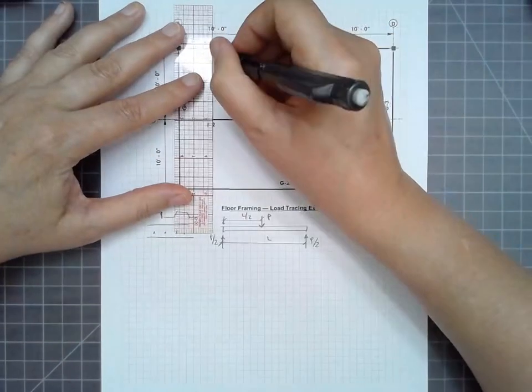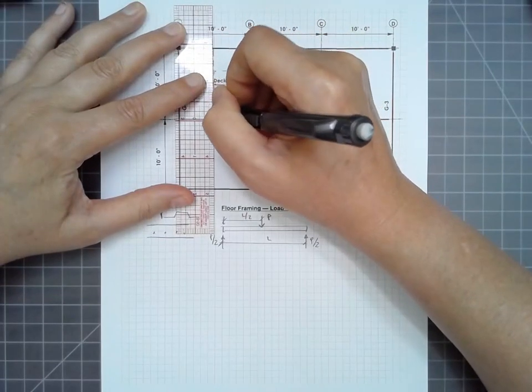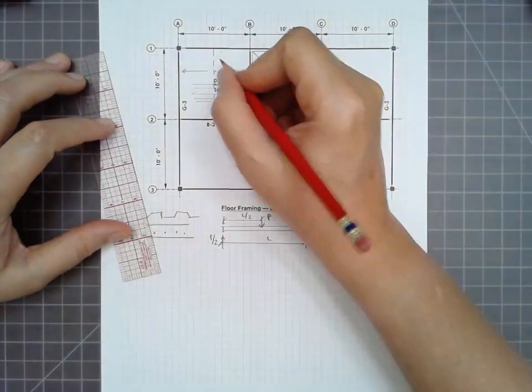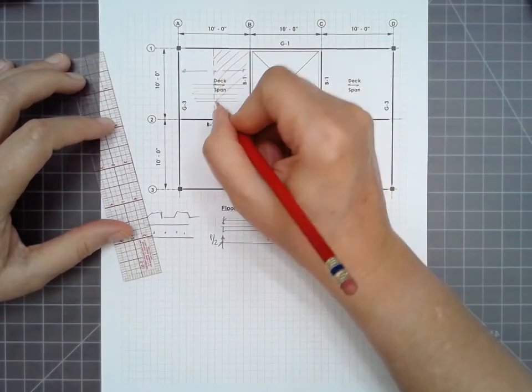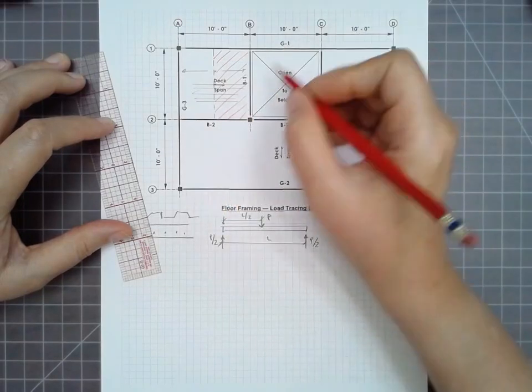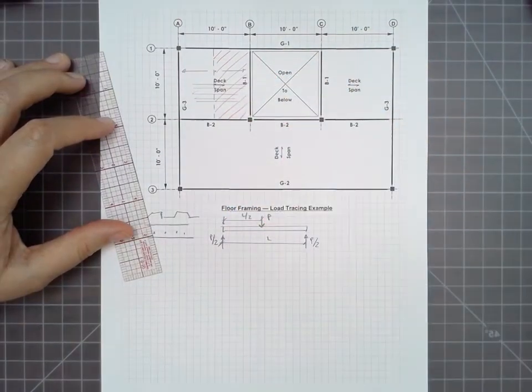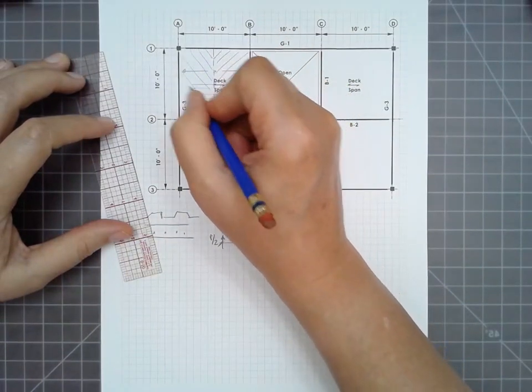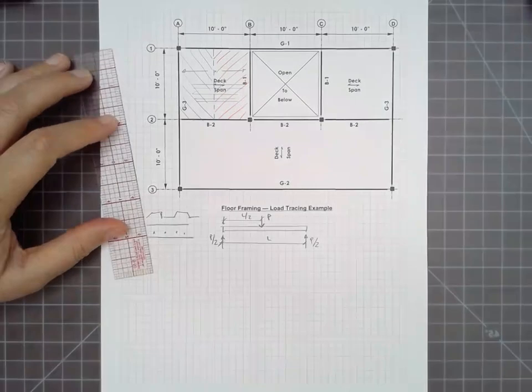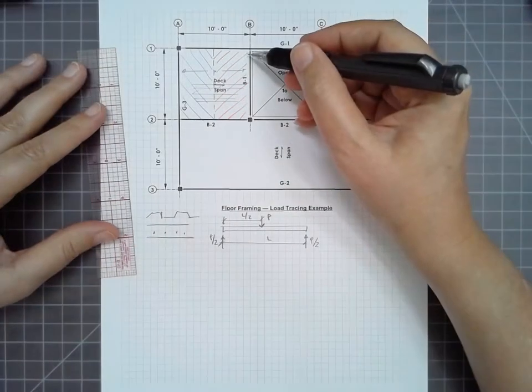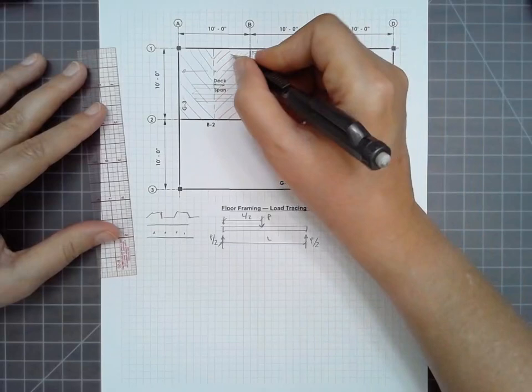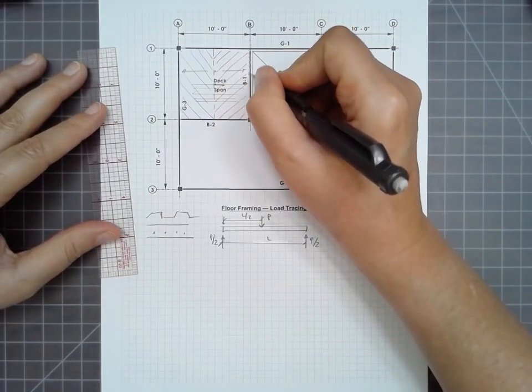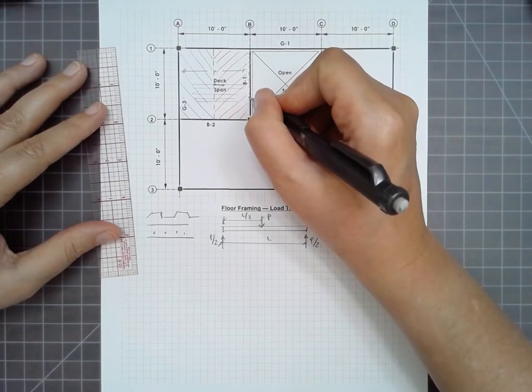So for convenience, what we can do is divide this in half and say that half of the structure on the right-hand side, all of that load is being transferred onto member B1. And the same thing is happening with element G3. That means that B1 is going to get a little bit of concentrated load for every little bit of a distance that we go along its length. In other words, it's a uniform load.